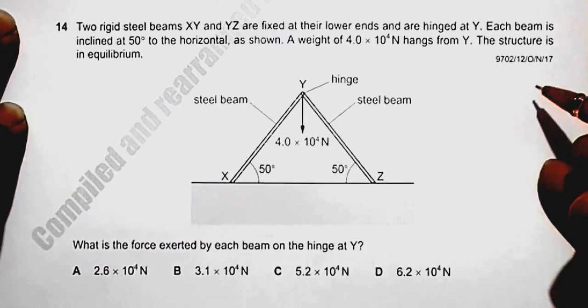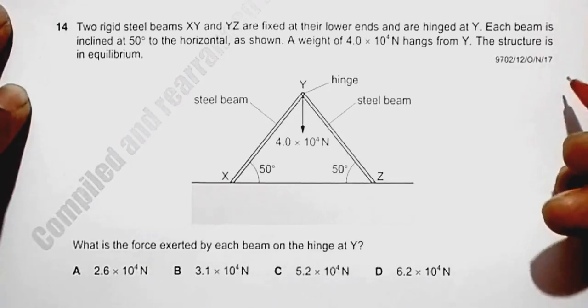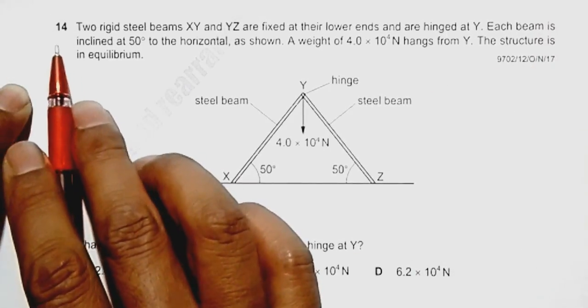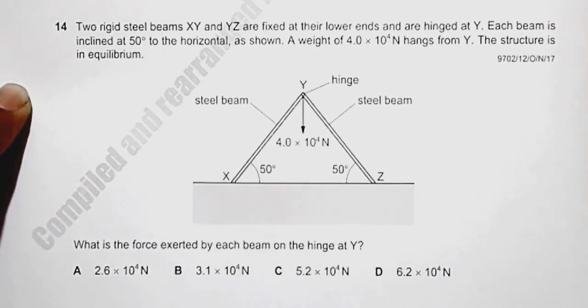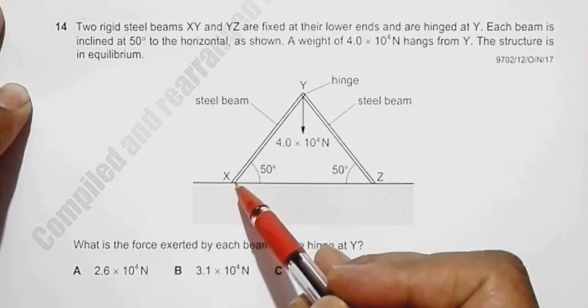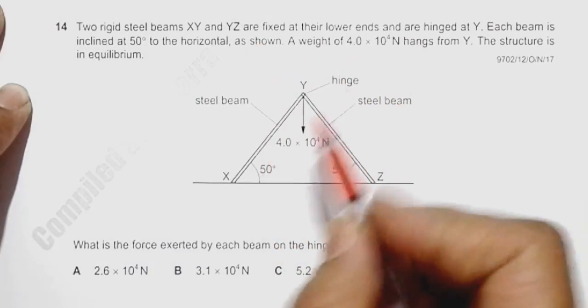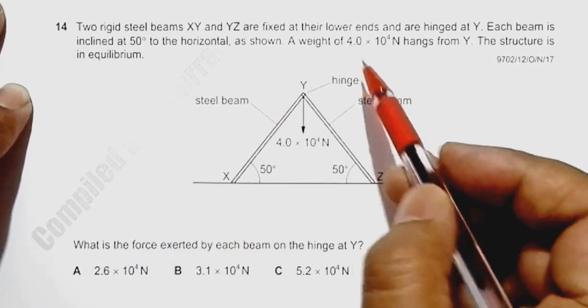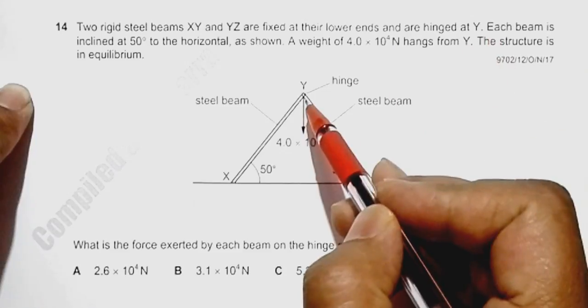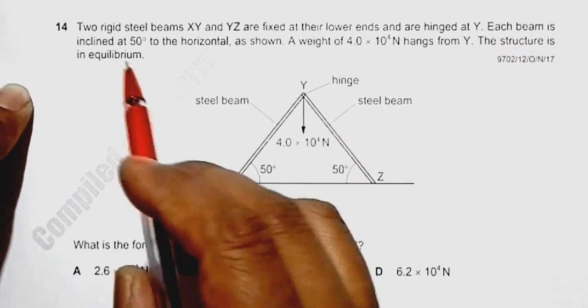This is question 14 from the 2017 October/November paper 12. It says two rigid steel beams XY and YZ are fixed at their lower ends and are hinged at Y. There is a hinge over here.